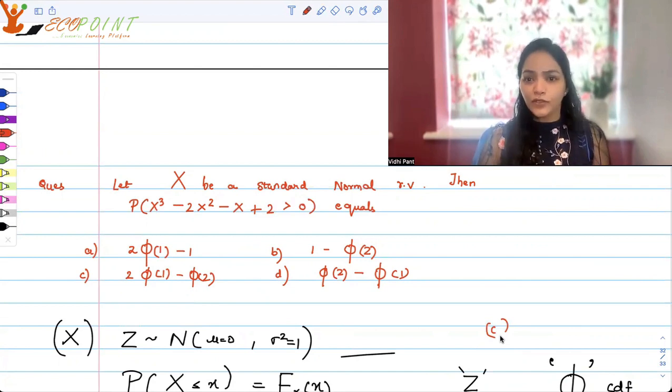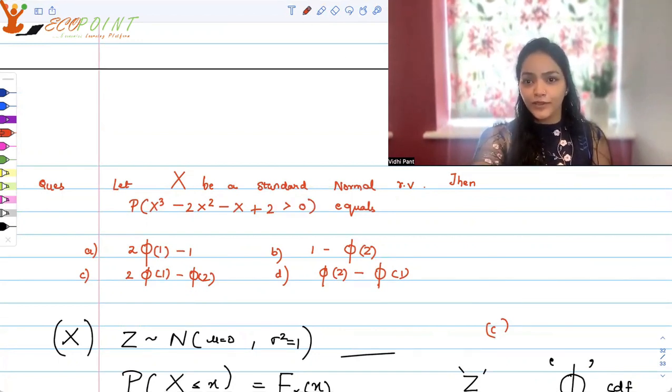So this is one of those questions wherein you really don't require any table or anything for normal. You don't need to remember any values. It's just logically you need to deduce what this probability will turn out to be. Thank you very much. I hope with this you will be able to revise on your standard normal distribution, normal distribution and also for that matter inequalities. Thank you.